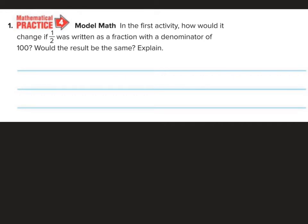What would change if 1 half was written as, sorry, in the first activity, how would it change if 1 half was written as a fraction with a denominator of 100? Would the result be the same? And let's talk about it. So I would take 1 half, and I want to make the 2 a hundred. So I'd multiply by 50 to equal 100. So I'd have to multiply the numerator by 50, so I would get 50 hundredths. Now, how would I write the number 50 hundredths as a decimal? I would write it as 0.50 to show 50 hundredths.